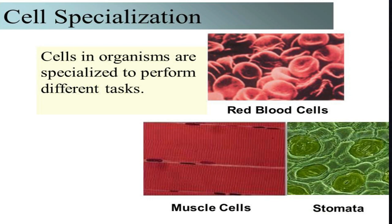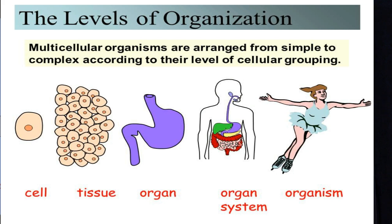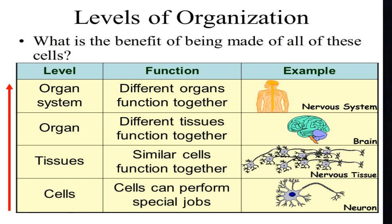For example, red blood cells help carry oxygen, and muscle cells do their specialized work. There are also specialized cells called stomata. When cells work together on tissues, we call them tissues. Tissues form organs, and many organ systems make up an organism. This is the basic fundamental of cell biology — the basic unit is a cell.